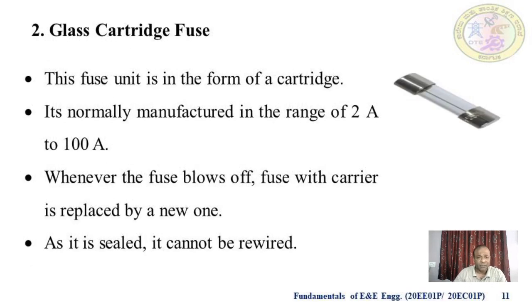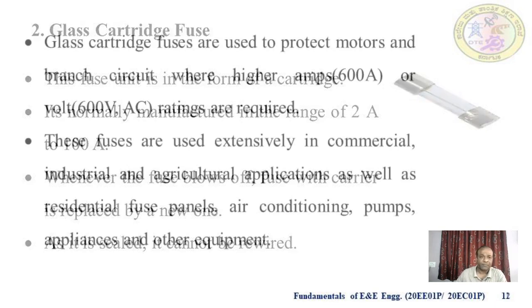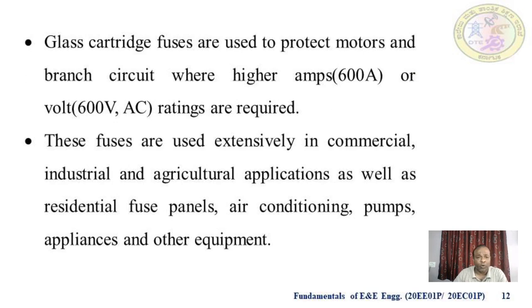The glass cartridge fuse is a form of cartridge fuse, normally manufactured in the range of 2 ampere to 100 ampere. Whenever the fuse blows off, the fuse with carrier is replaced by a new one. As it is sealed, it cannot be rewired. Cartridge fuses are used to protect motors and branch circuits where higher ratings are required, like 600 ampere, 600 volt AC. These fuses are used extensively in commercial, industrial and agriculture applications as well as residential fuse panels, air conditioning, pumps, appliances and other equipment.